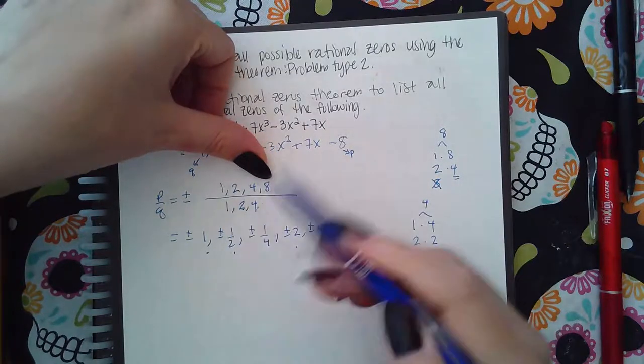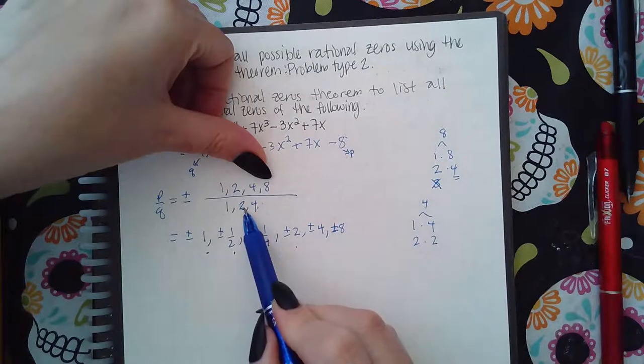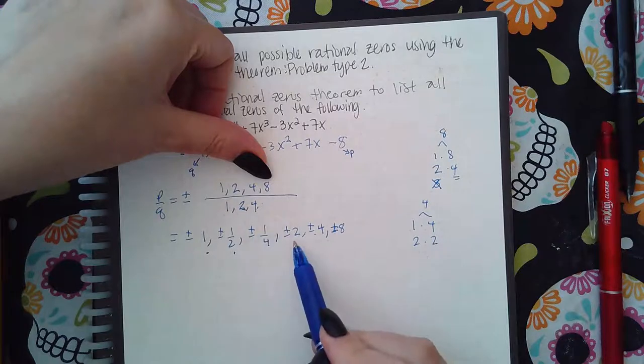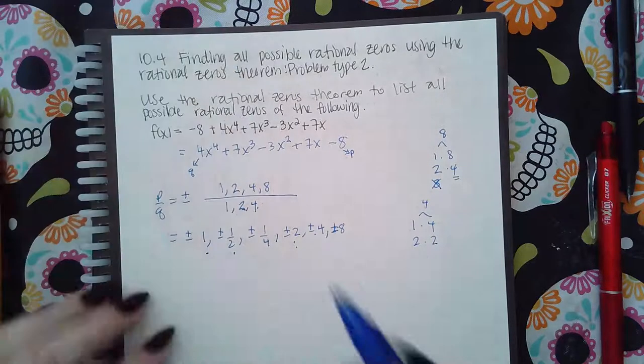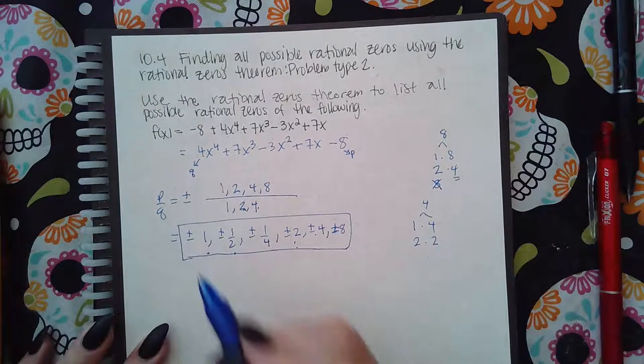8 over 1 is 8. 8 over 2 is 4 and that's already here. 8 over 4 is 2 and that's already there. So this is the complete list of all the factors without anybody repeating.